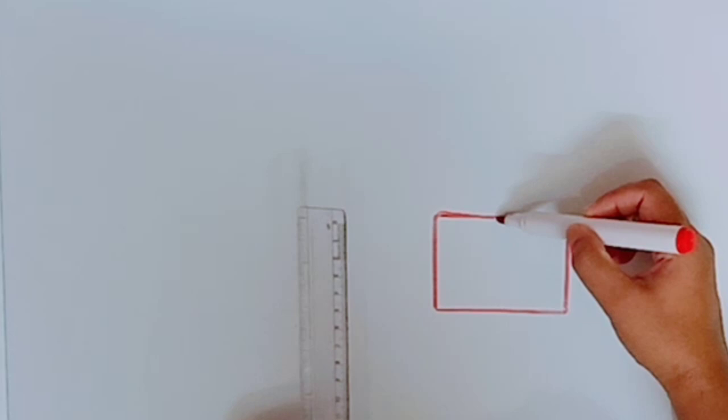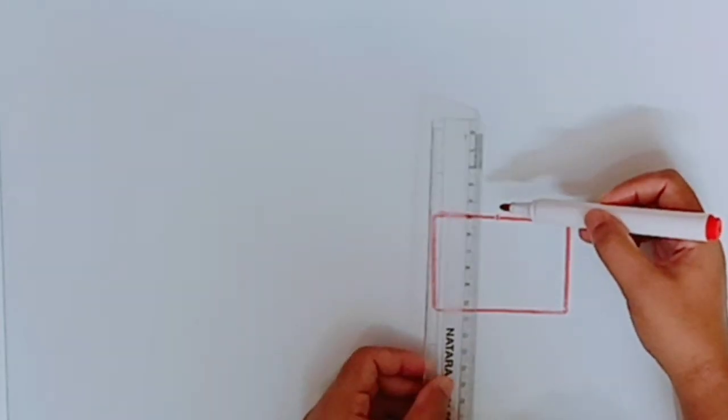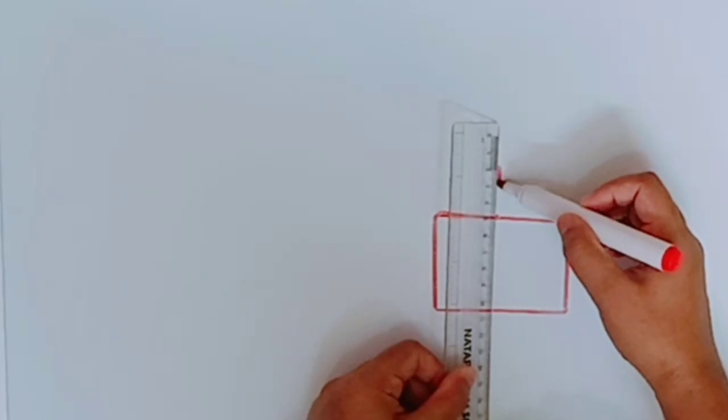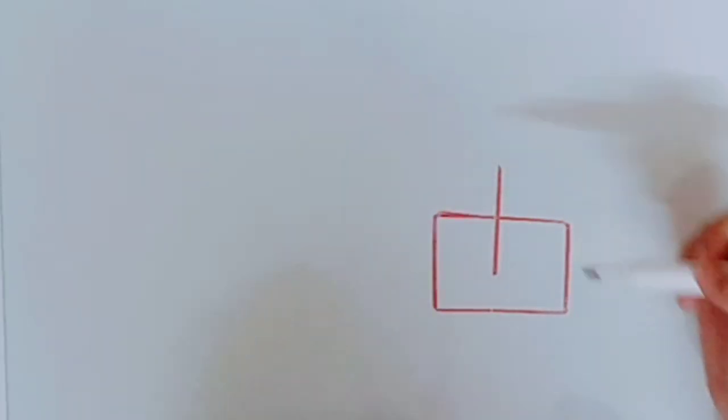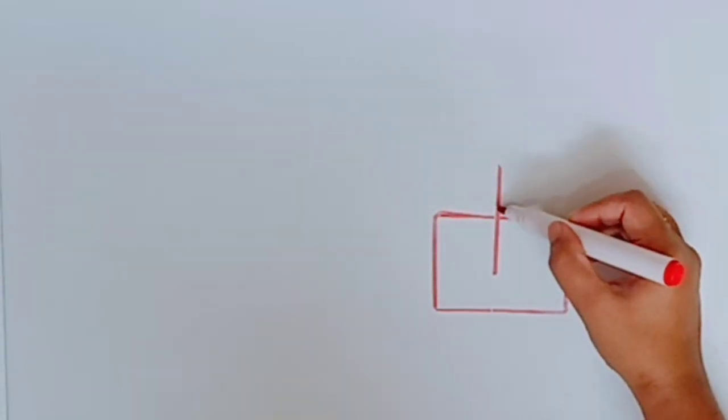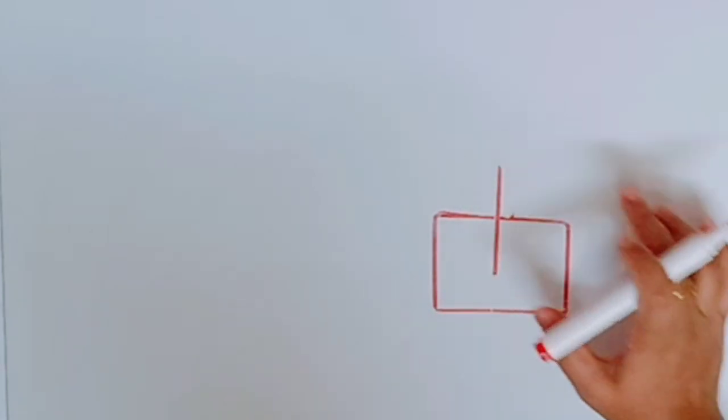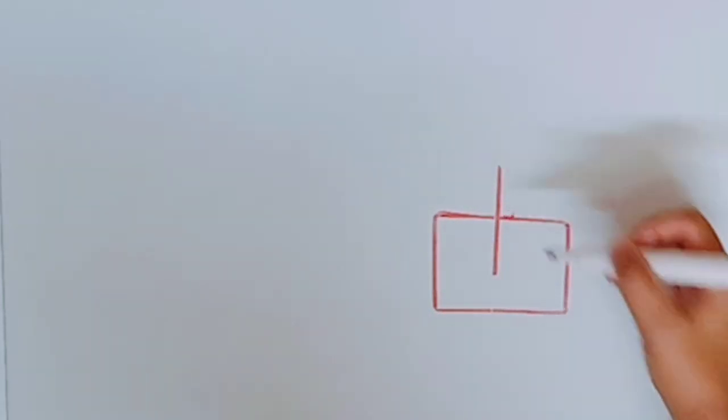Now pick any point on one side of the glass slab, somewhere near to the middle. You cannot get exactly the midpoint, but somewhere near to the middle and draw a perpendicular. Now what will this perpendicular become?